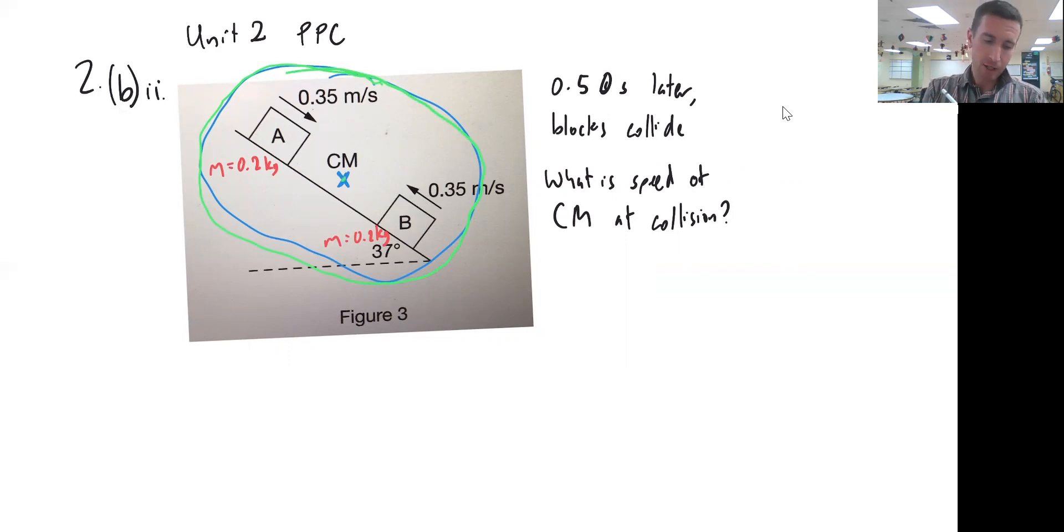Then I'm only paying attention to that dot of the center of mass, and I'm trying to figure out what is the velocity of that center of mass half a second after this occurs.